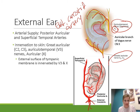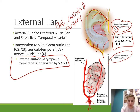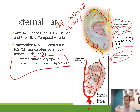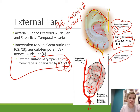Innervation to the skin of the ear is mostly via the greater auricular nerve and the auriculotemporal nerve. The greater auricular nerve comes from the cervical spinal nerves. The auriculotemporal nerve innervates the superficial part of the ear and is from the trigeminal nerve, specifically V3, the mandibular nerve. There is a central area that is innervated by the auricular branch of the vagus nerve, cranial nerve 10. The external surface of the tympanic membrane is highly innervated and extremely sensitive. It is innervated by both the vagus nerve as well as the auriculotemporal nerve, the mandibular nerve.